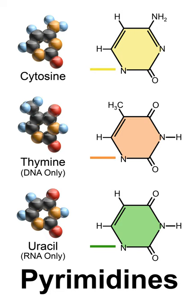In nucleic acids, three types of nucleobases are pyrimidine derivatives: cytosine, thymine, and uracil. The pyrimidine ring system has wide occurrence in nature as substituted in ring-fused compounds and derivatives, including the nucleotides cytosine, thymine and uracil, thiamine, vitamin B1, and alloxan.